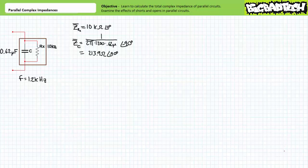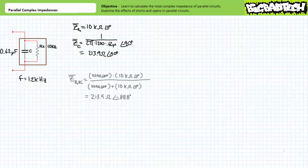The leakage resistive portion has a complex impedance of 10 kilo ohms at an angle of zero degrees. Substituting our given values into the capacitive complex impedance formula, we find the capacitive portion to be an impedance of 213.9 ohms at an angle of negative 90 degrees. Calculating the total impedance of the parallel resistive and capacitive contributions, we find this non-ideal capacitor presents an impedance of 213.9 ohms at an angle of negative 88.8 degrees.